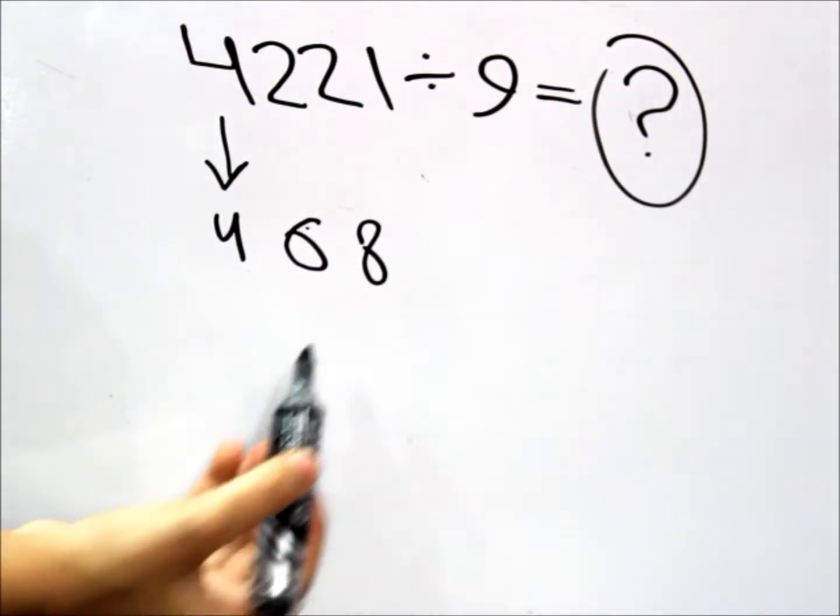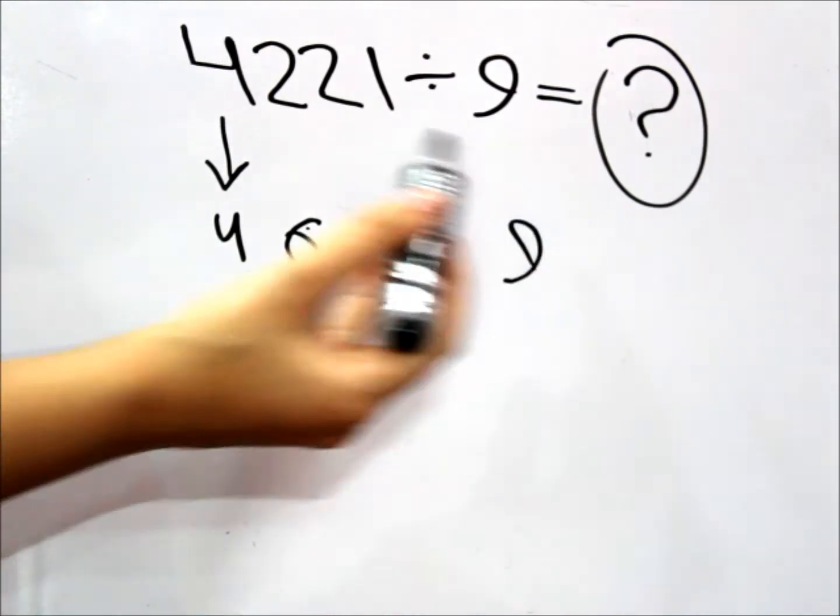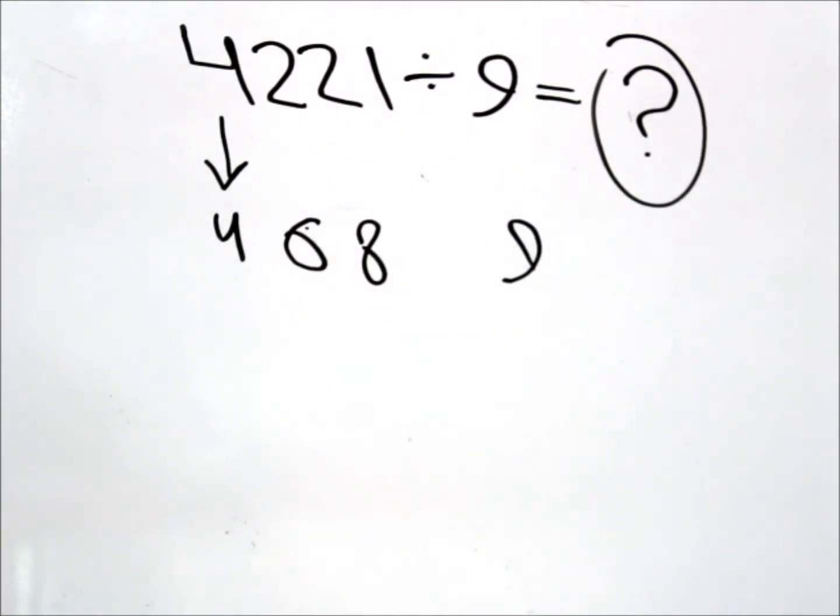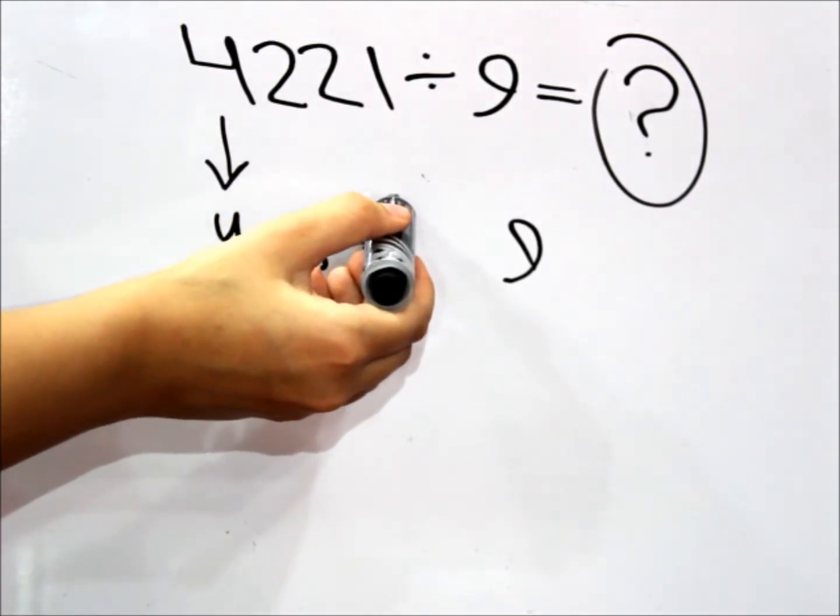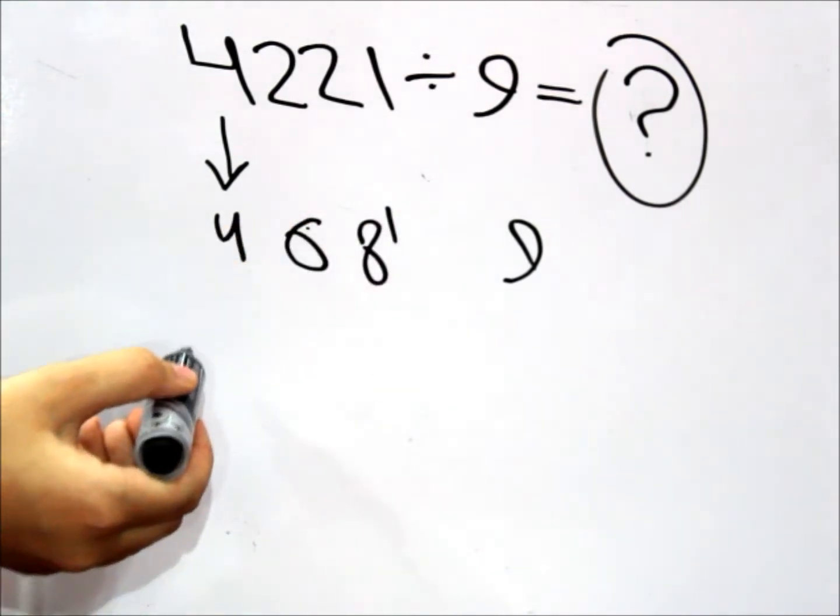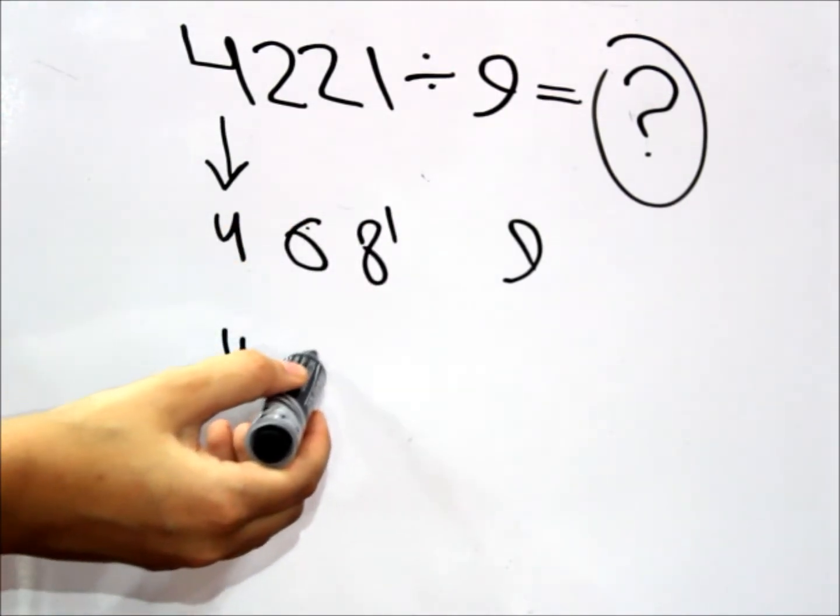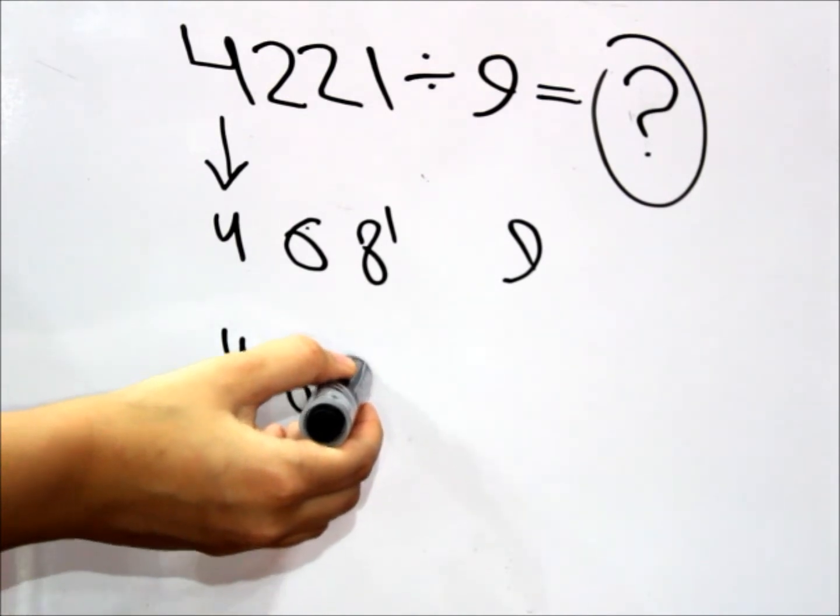But we're not going to place the 9 over here. We're going to put the 9 over here. Because this is the remainder, if we have a remainder. So in this case, the remainder is 9. So 9 divided by 9 is 1. We're just going to put the 1 in here. And the answer would be 469.